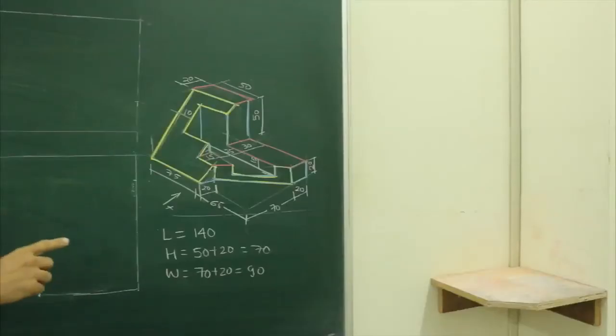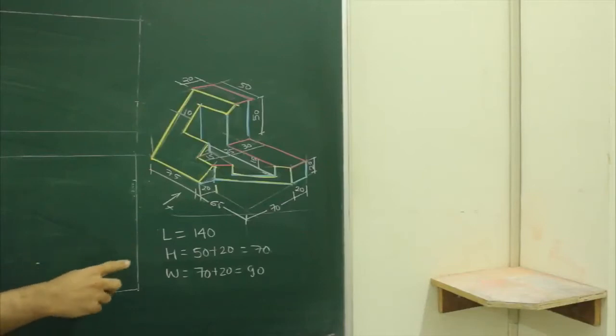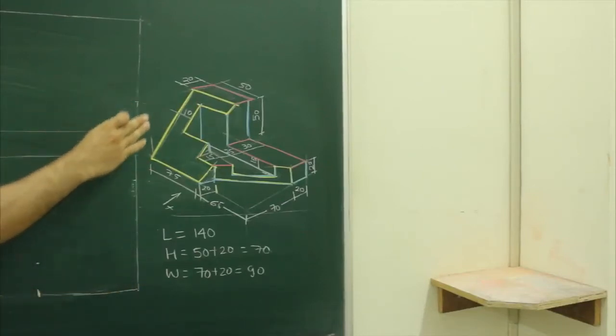In this thumb, length is 140, height is 70, and width is 90. Now when you see from the front you will see a slope, when you see from the top you will see a slope.